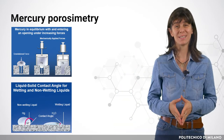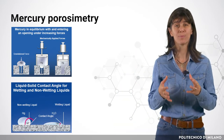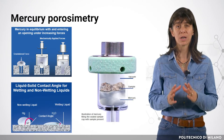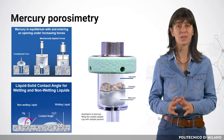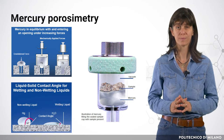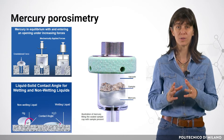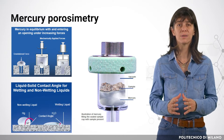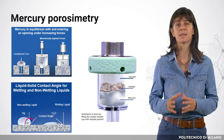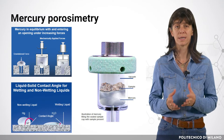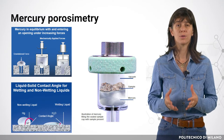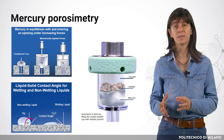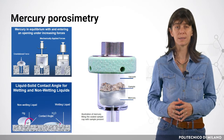Mercury porosimetry analysis is the progressive intrusion of mercury into a porous structure under stringently controlled pressures. From the pressure versus intrusion data, the instrument generates volume and size distributions. Clearly, the more accurate the pressure measurements, the more accurate the resulting pore size data.